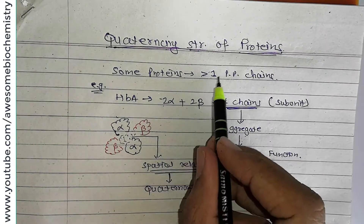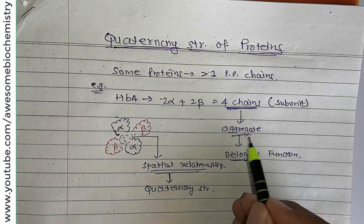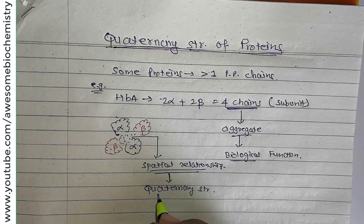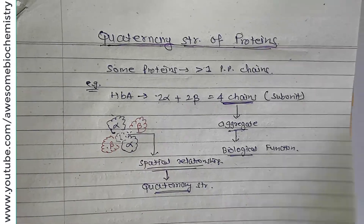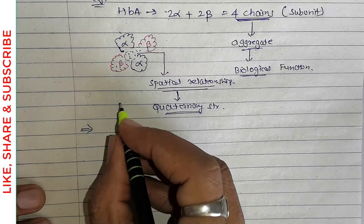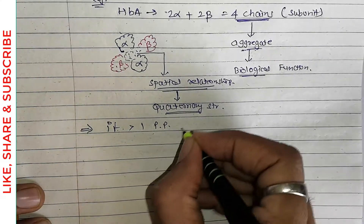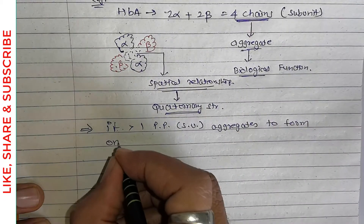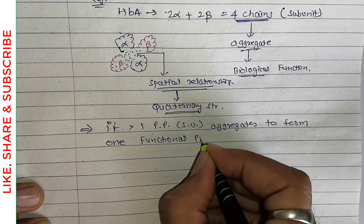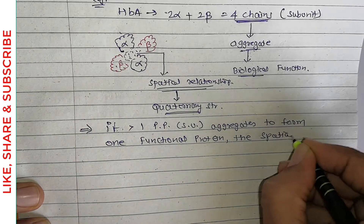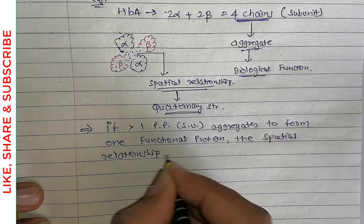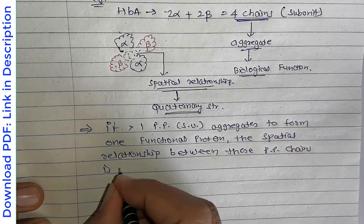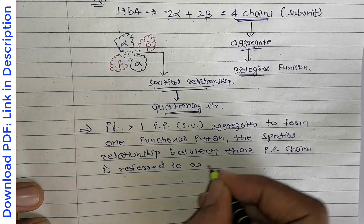If more than one polypeptide chains aggregate to form one functional protein, then the spatial relationship between all these polypeptide chains or subunits is referred to as quaternary structure. This is the definition of quaternary structure.